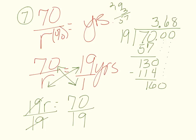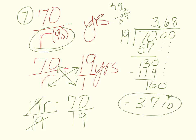19 goes into 160 eight times, but we can stop there because we can round to the tenths place. Our answer is 3.7, and that comes out as a percentage because r comes out as a percentage. So r equals 3.7%.